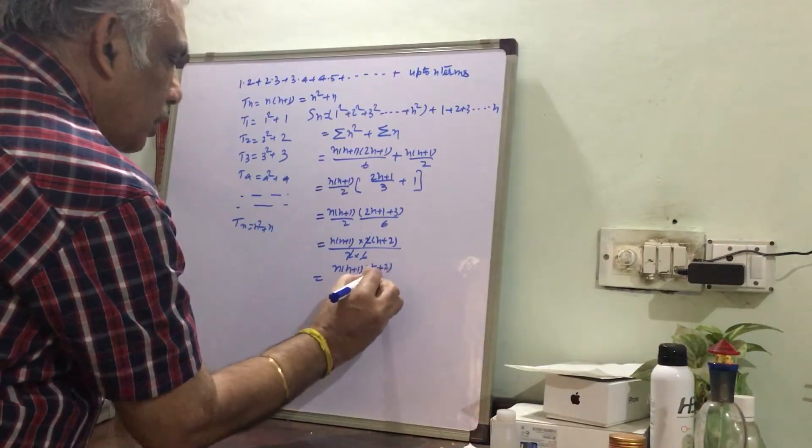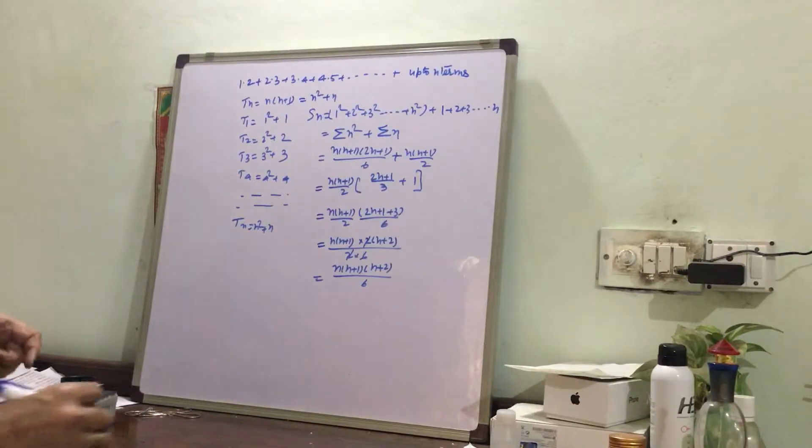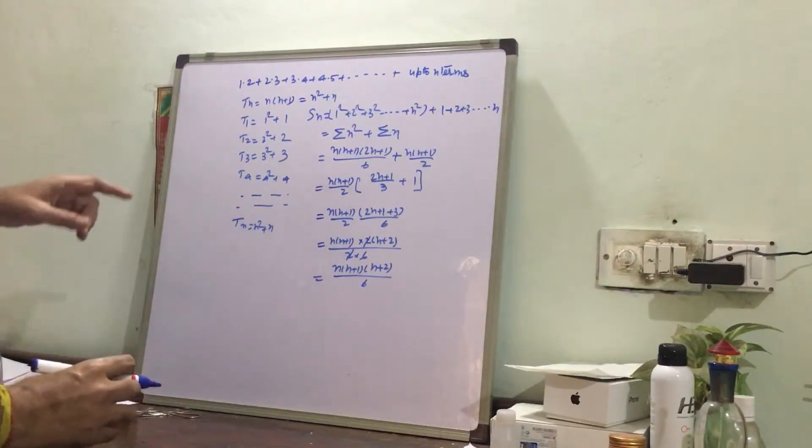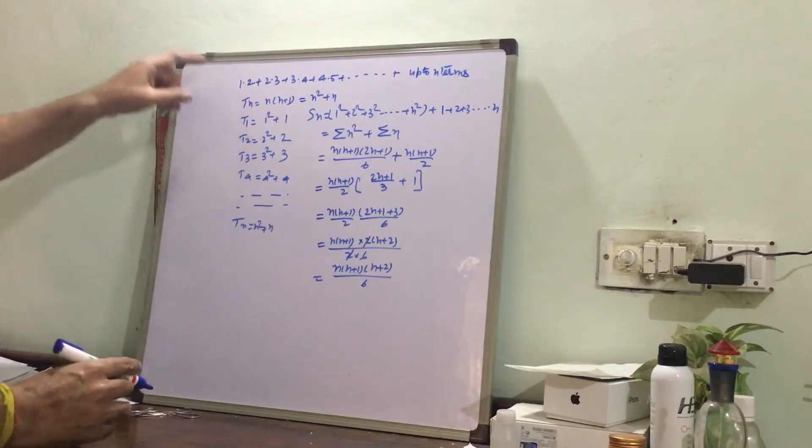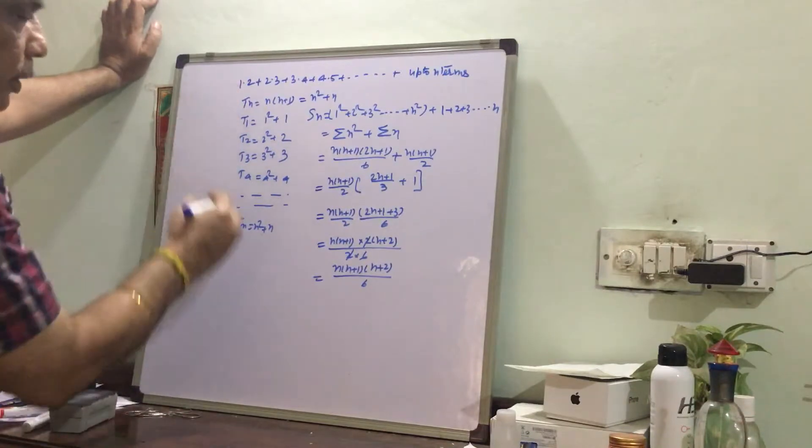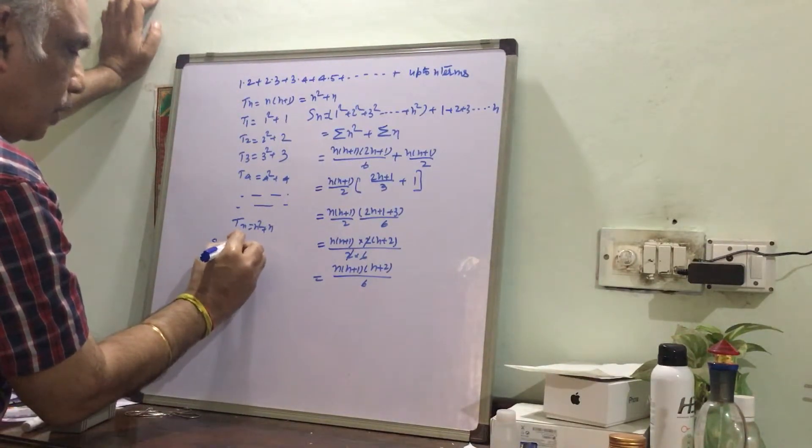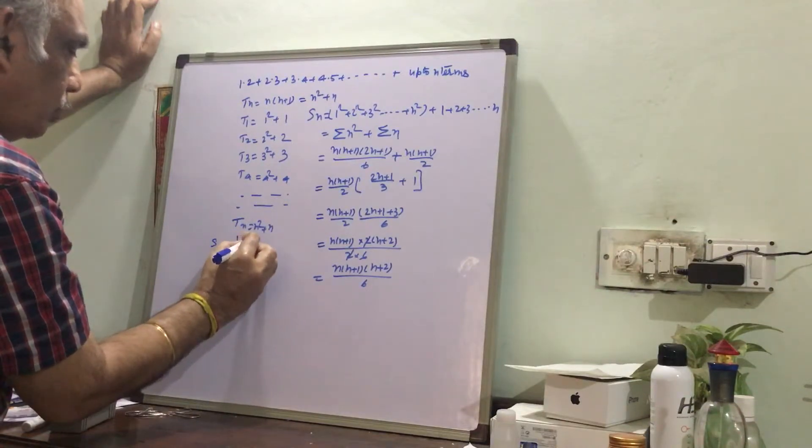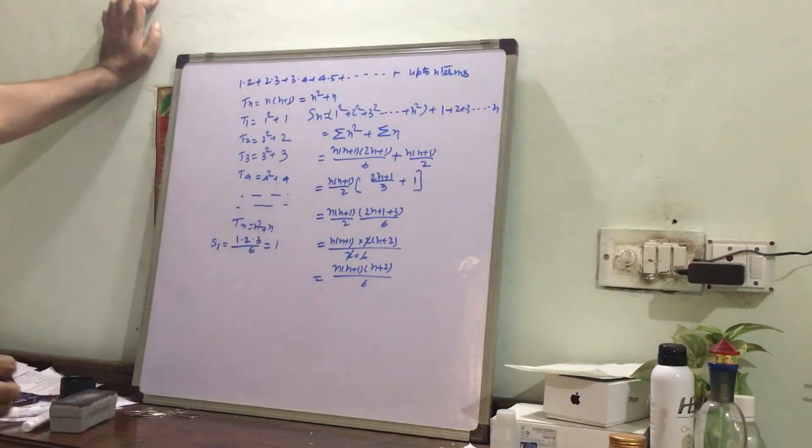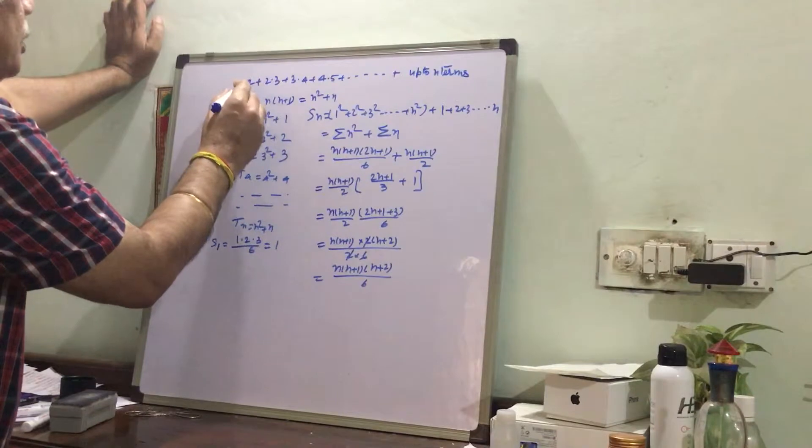So this is our final answer. We can check it also. See here, for S1 it is 2, and let us see whether we get 2 here or not. 1 into 2 into 3 by 3 equal to 2. Or two terms, it is 2 plus 2×3, that's 2 plus 6.